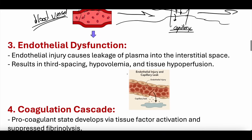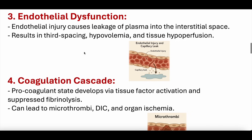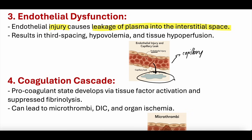Endothelial dysfunction is another key process. The endothelium are the cells that line the blood vessels — they make up the walls of the capillaries. When you get cytokine release, there's endothelial injury that causes leakage of plasma into the interstitial space. Capillaries normally have tight junctions between endothelial cells, carefully regulating what leaves and enters. When endothelial injury breaks down that barrier, things can leak out into the tissues — plasma can be lost — leading to hypovolemia or decreased intravascular volume.